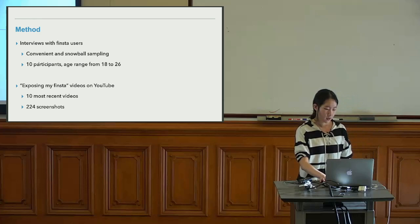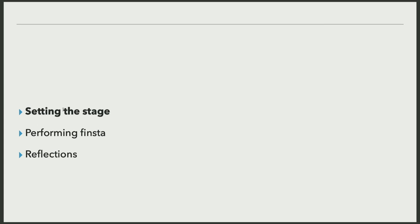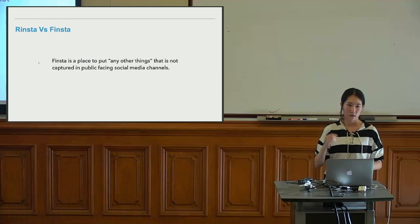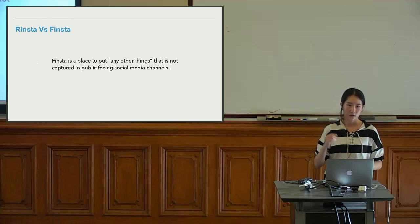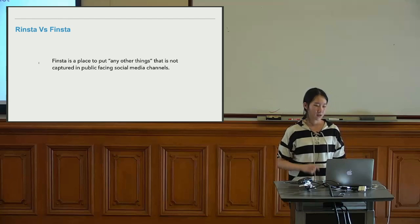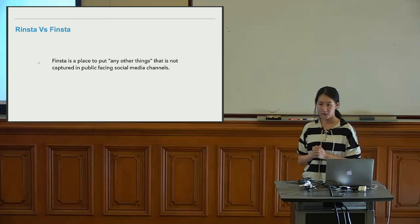We present results in three folds, drawing from Goffman's self-presentation theory — that self-presentation can be seen as a performance on a theater stage. We illustrate how Finsta users are setting the stage, how they perform on the stage, and their reflections, constantly comparing their Ringsta and Finsta. To participants, Finsta is a place to put anything not captured in public-facing social media channels, so they are constantly comparing the two.